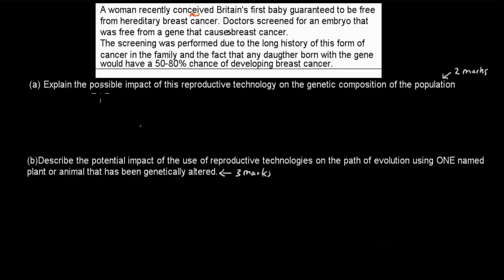Part A: Explain the possible impact of this reproductive technology on the genetic composition of the population — two marks. Part B: Describe the potential impact of the use of reproductive technologies on the path of evolution, using one named plant or animal that has been genetically altered — three marks. Pause the video and attempt the question.